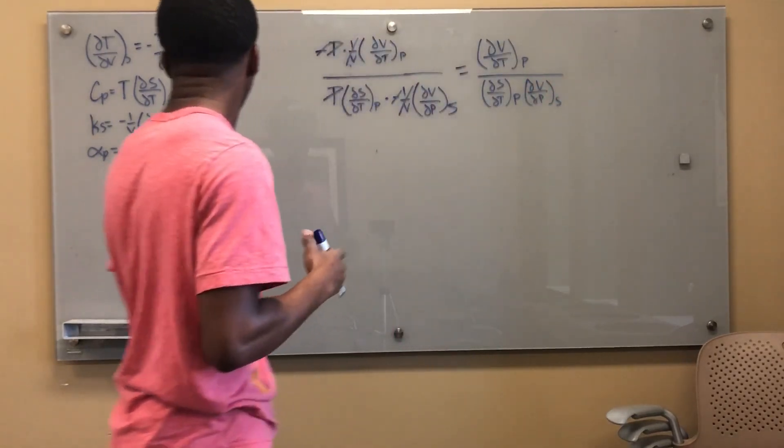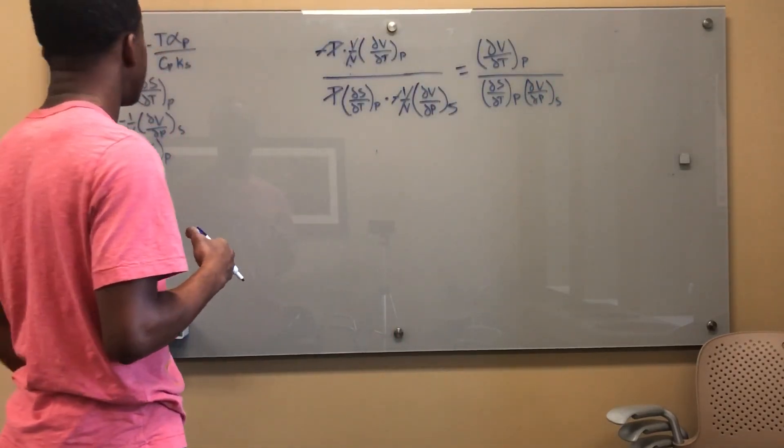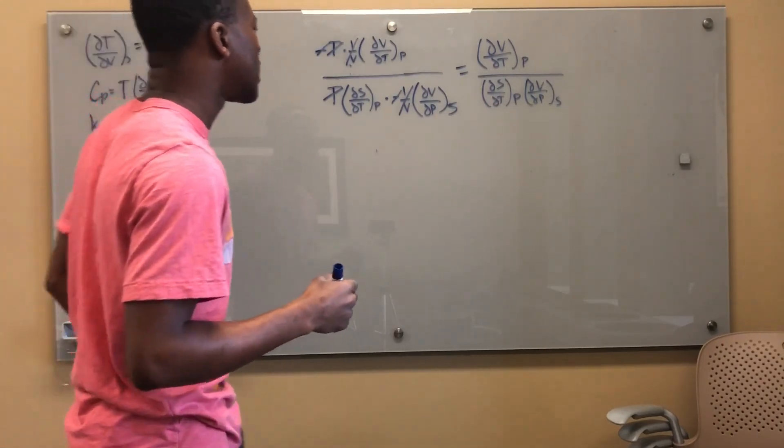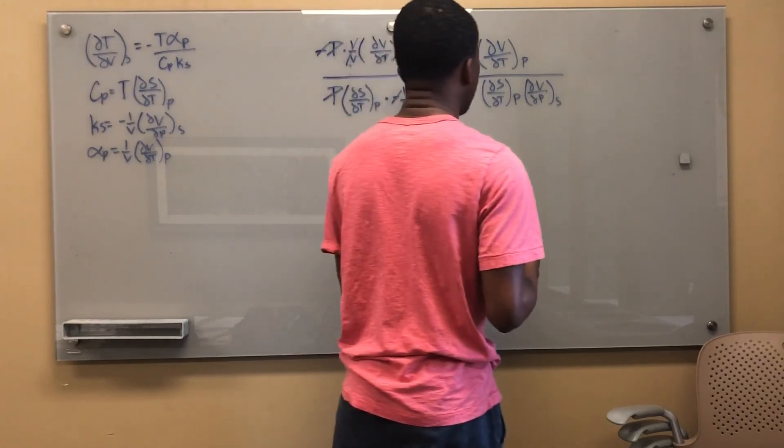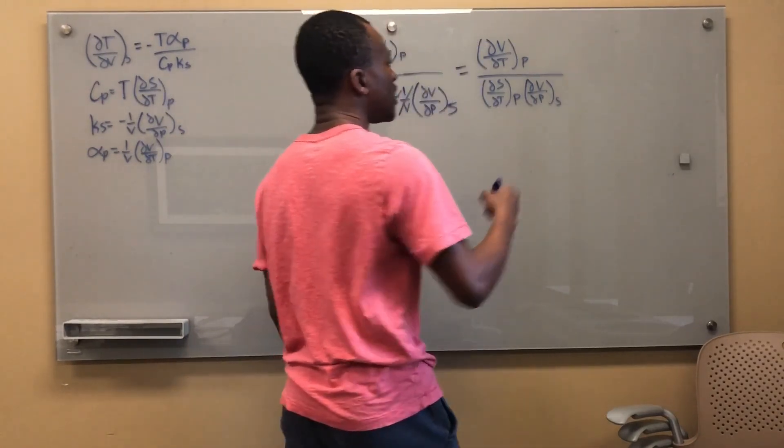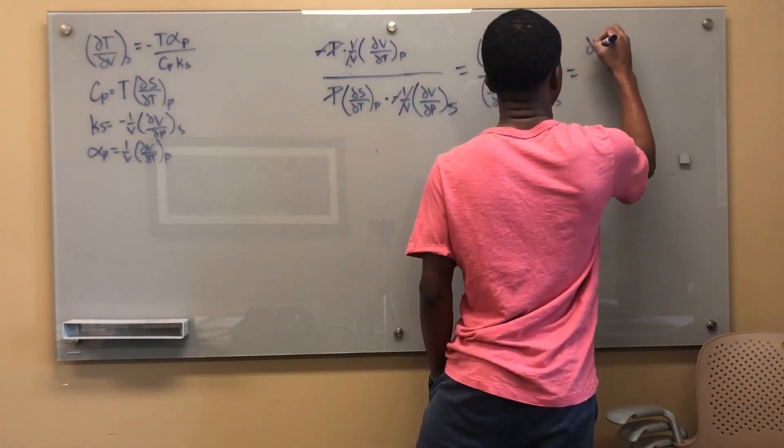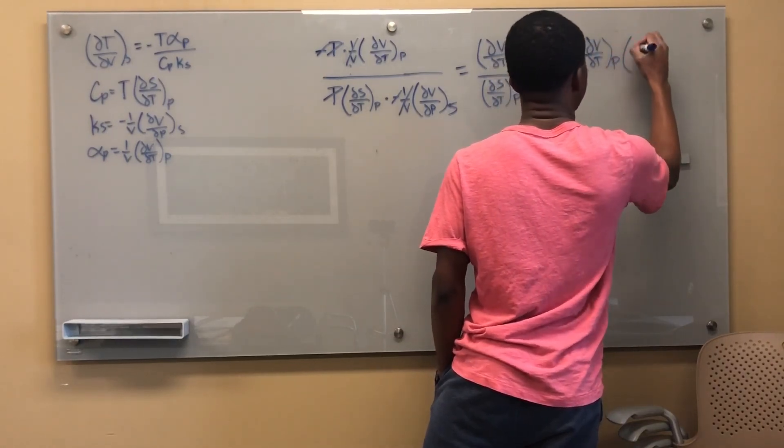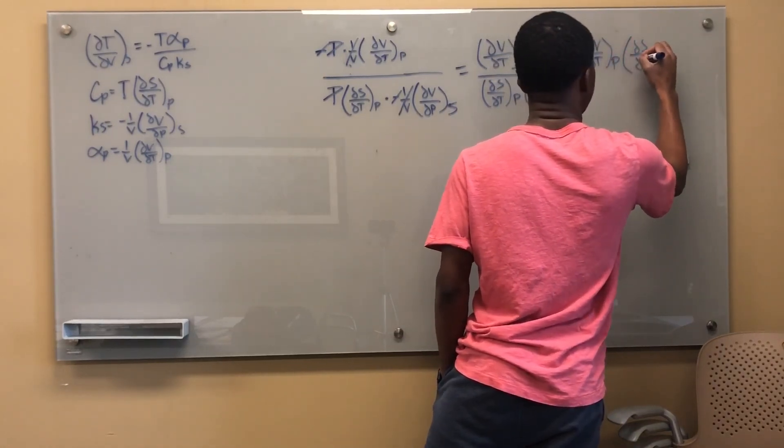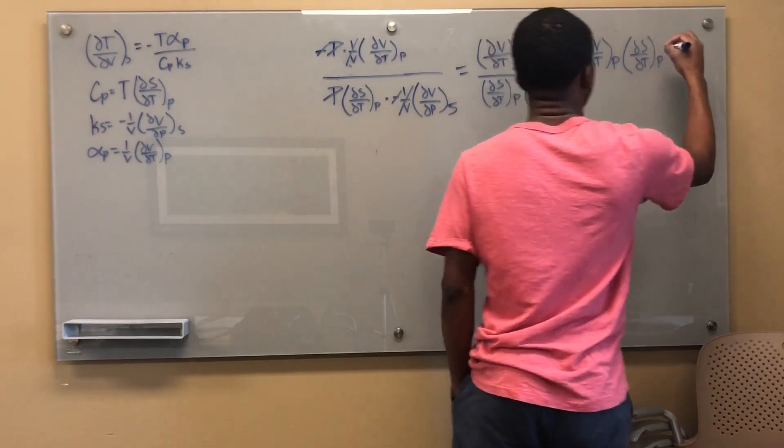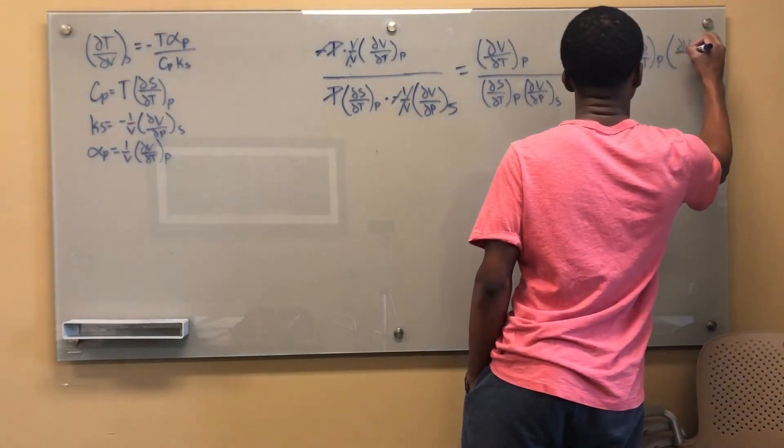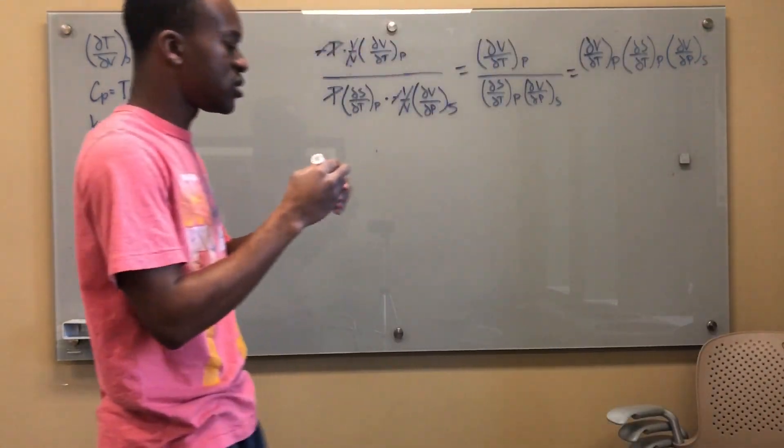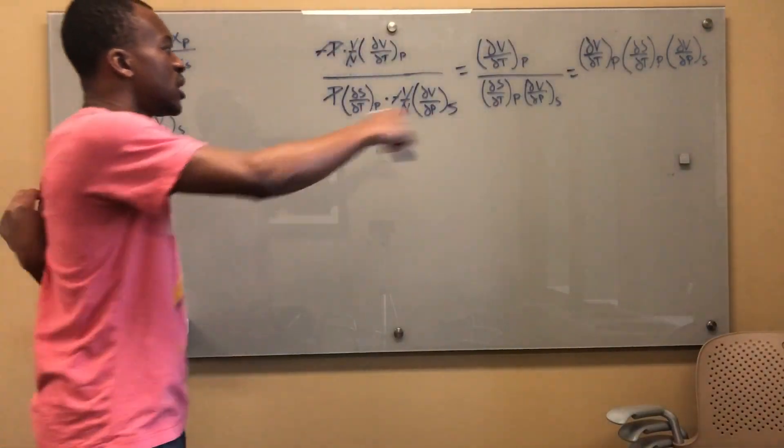Now, what I want to go ahead and do, I'm trying to get del V del T at constant S. So I can sort of see that this is equal to this, right? Del V del T at constant P times del S del T at constant P times del V del P at constant S. Those three things are equal, or those two things are equal.